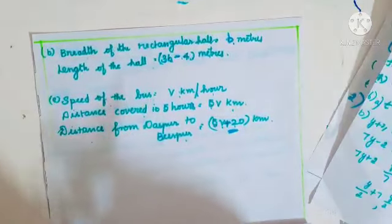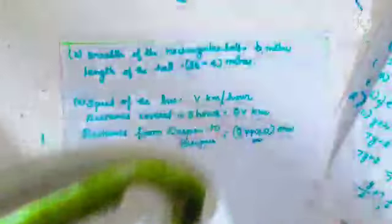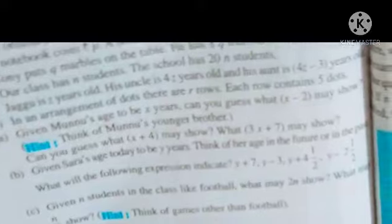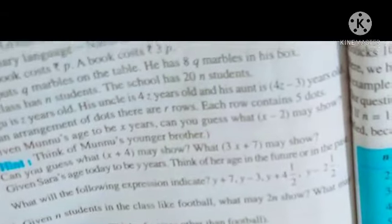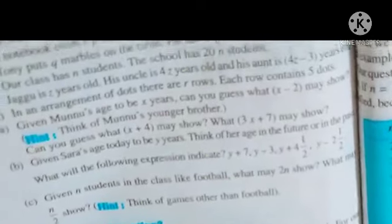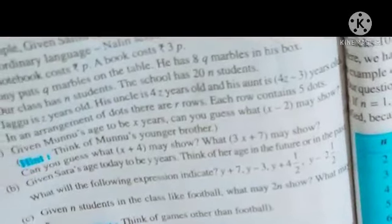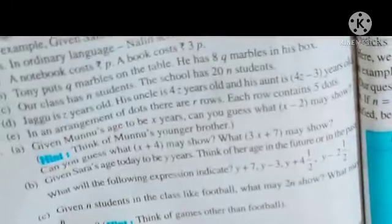Now change the following statements using expressions into ordinary language. (a) 'A notebook costs rupees P; a book costs rupees 3P' — in ordinary language: 'A book costs 3 times the cost of a notebook.'